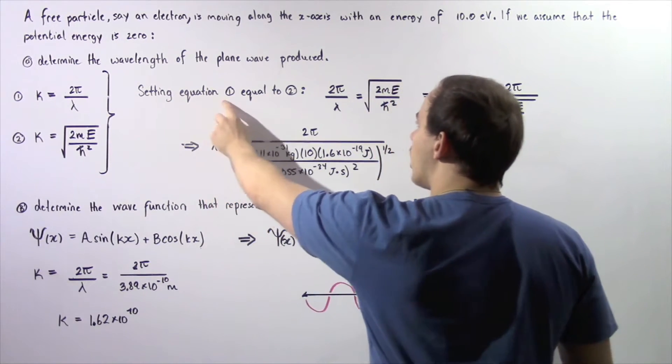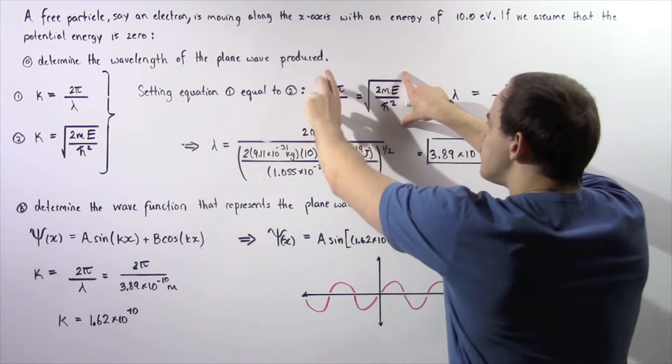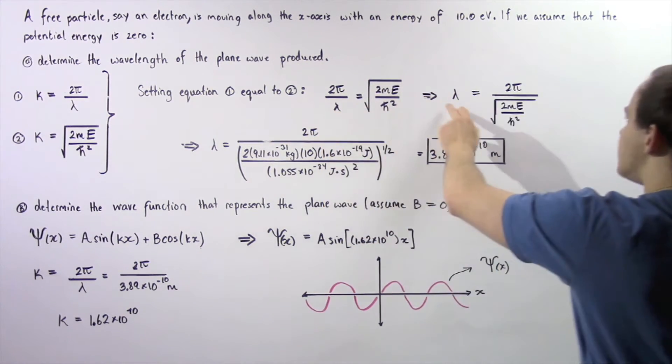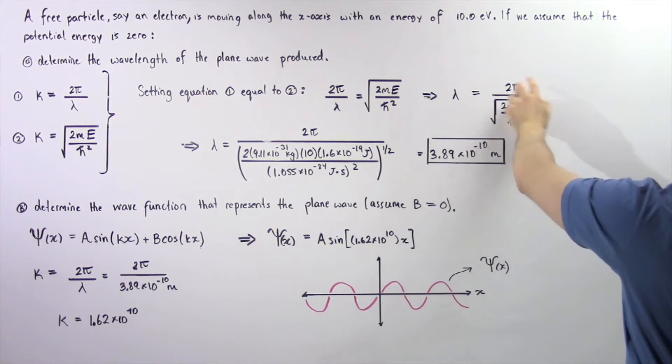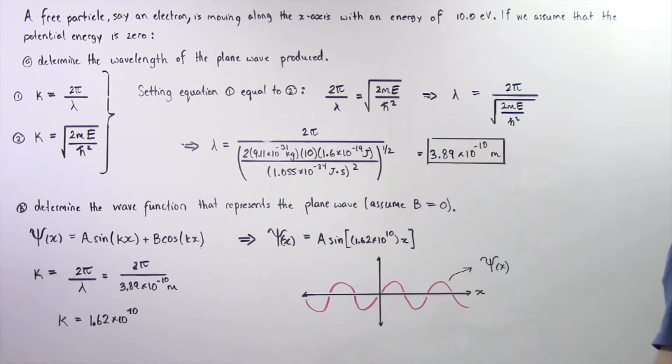So setting equation 1 equal to equation 2, we get the following result. Next we rearrange and solve for our λ, and the wavelength is equal to 2π divided by the square root of 2m multiplied by E divided by ℏ squared.